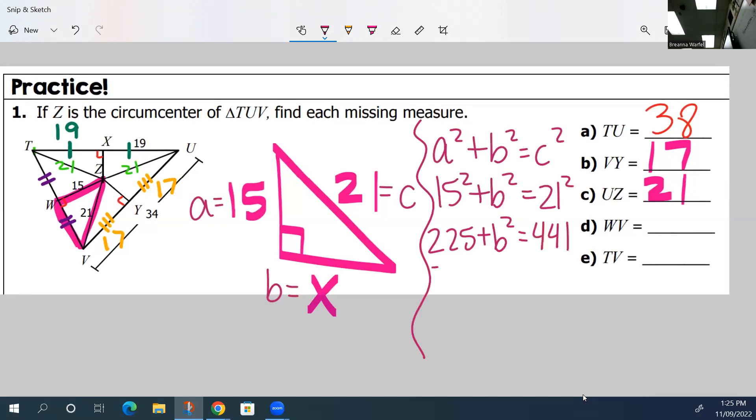To solve for B squared, I need to take away 225 on both sides. So B squared equals 216. And you take the square root of that. That means B is about 14.7.